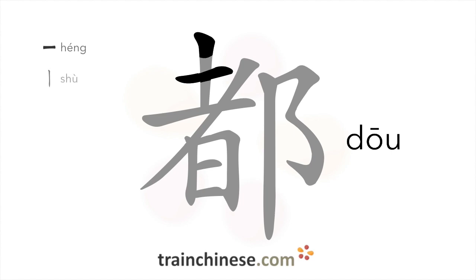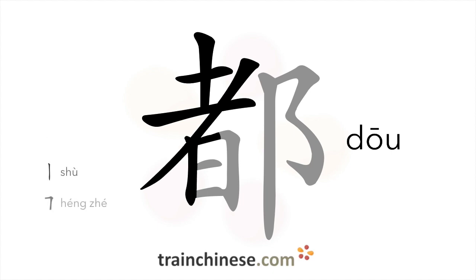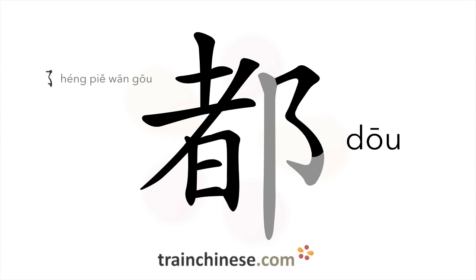The stroke order is as follows: 橫, 樹, 橫, 撕, 樹, 橫折, 橫, 橫, 橫撕, 樹.